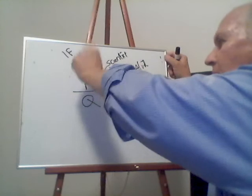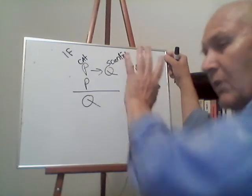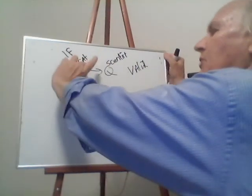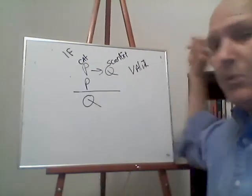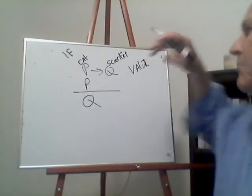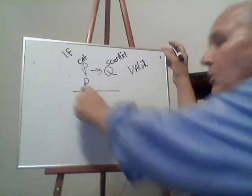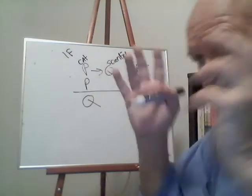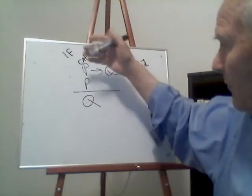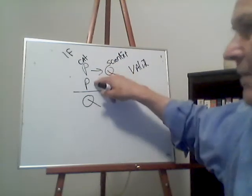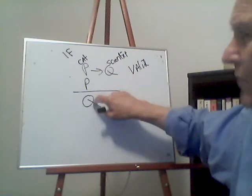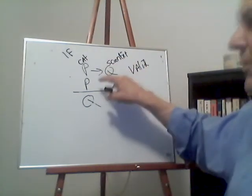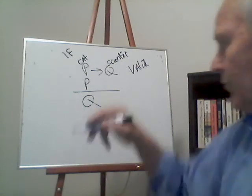Take: if it's a cat, then it's a scientist. We don't care whether it's actually true — let's just pretend it's true and see what follows. If P then Q — assume it's true. And assume P is true. Well, what logically has to be the case? Q has to be true. If this is true and that's true, this has to be true. You cannot even imagine the conclusion not being true given those premises. This is a valid argument.